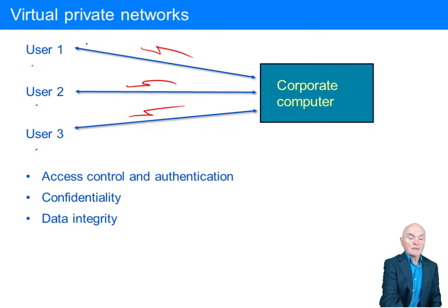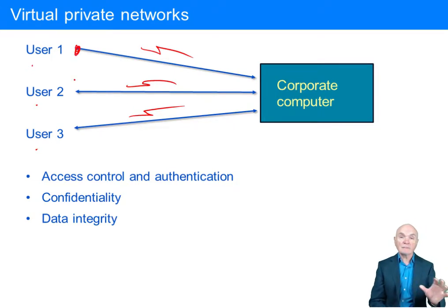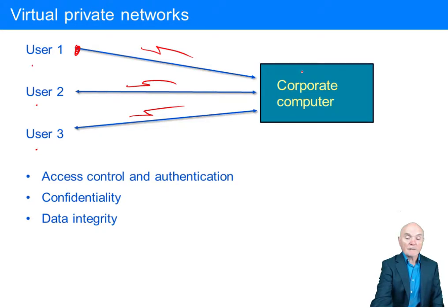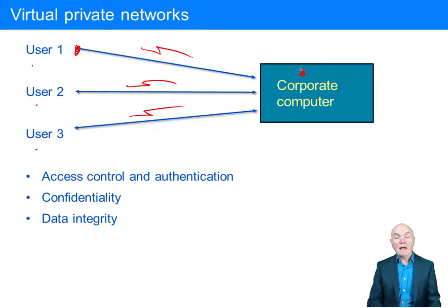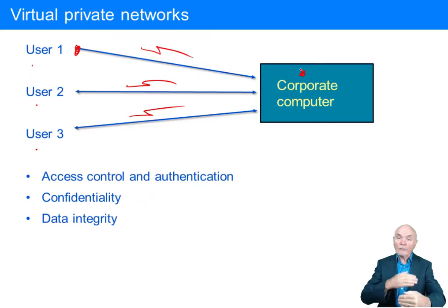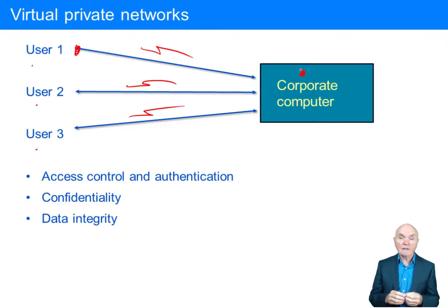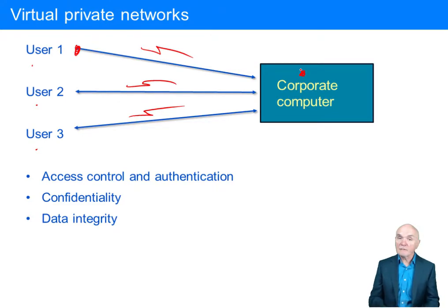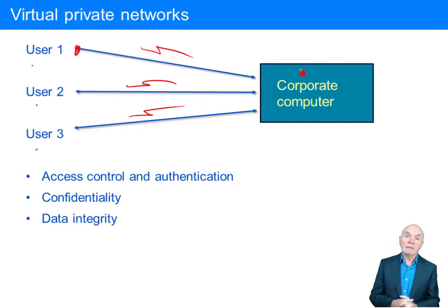There is then confidentiality — how do we know that information travelling from a user on the US west coast to a corporate computer in the UK, through miles of communications circuits, has not been stolen? That is largely done by encrypting the information — it is jumbled up using a very complicated algorithm — and only the people at the other end who know the unlocking key can make sense of it.